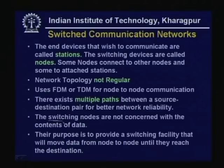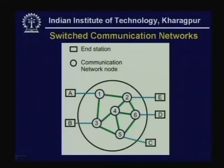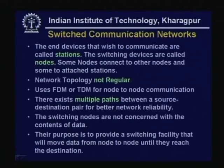Another important feature is that switching nodes are not concerned with the contents of data — whatever data is sent by a station is communicated by the node. Nodes can be considered as dumb devices: whatever is received is transmitted to another node or the destination station. The nodes do not modify the information or data.